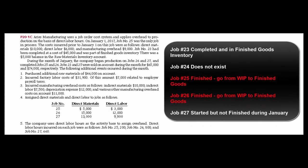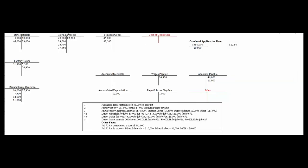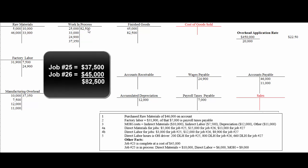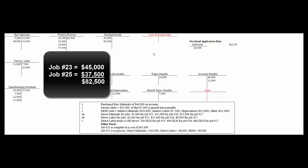Now let's finish up the T-accounts. Jobs 25 and 26 are done, so that money comes out of work in process and goes into finished goods. Jobs 23 and 25 were sold, so they come out of finished goods and go into cost of goods sold. Jobs 25 and 26 together cost $37,500 plus $45,000, so we take $82,500 out of work in process and move it into finished goods. Then jobs 23 ($45,000) and 25 ($37,500) — totaling $82,500 — move from finished goods to cost of goods sold.